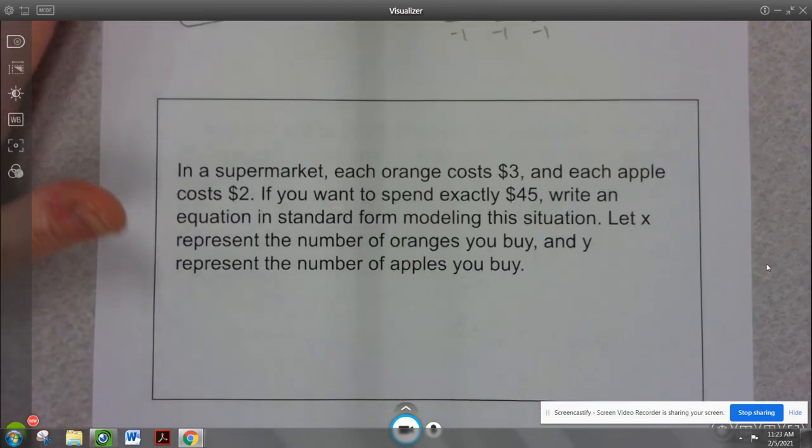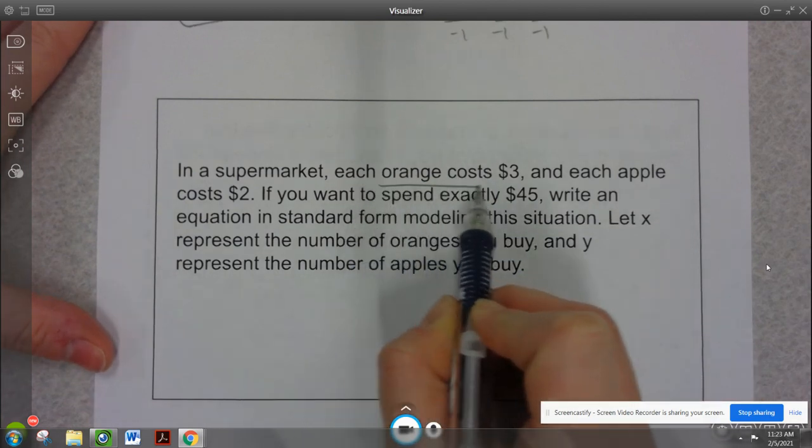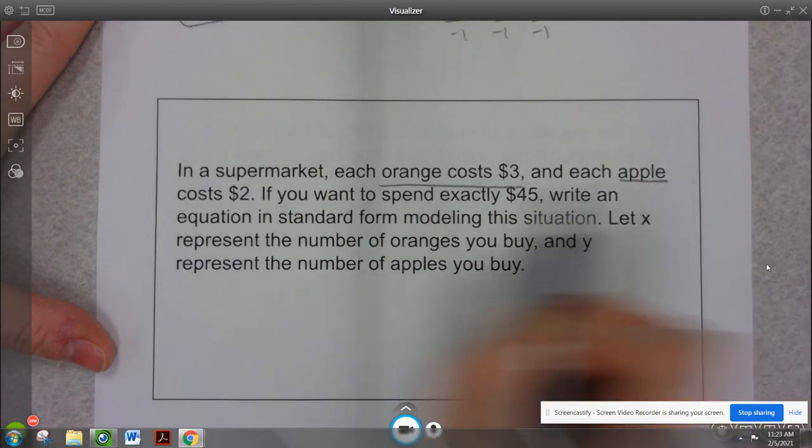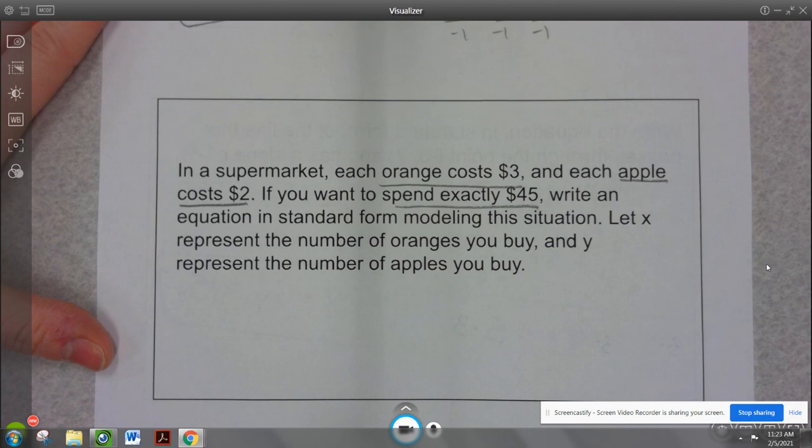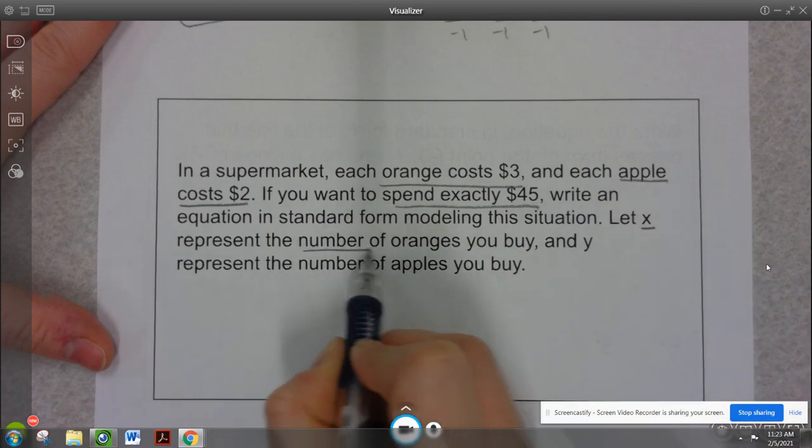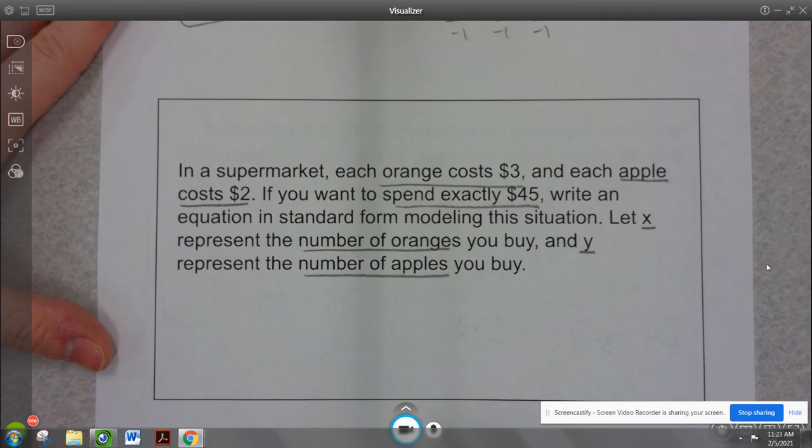All right, last one we're going to do in this video. An orange costs $3. An apple costs $2. I want to spend exactly $45. And our goal is to write an equation in standard form. x is going to be number of oranges. Y is going to be number of apples. Now if I'm going to the store, and I know that one orange costs $3.